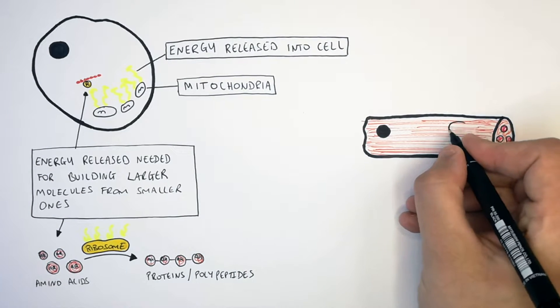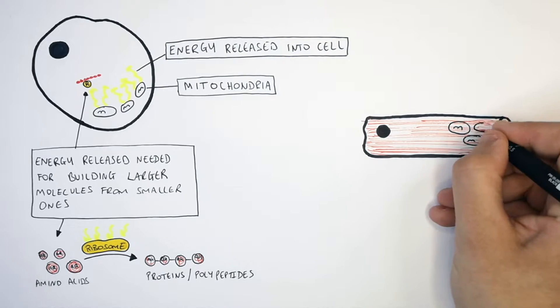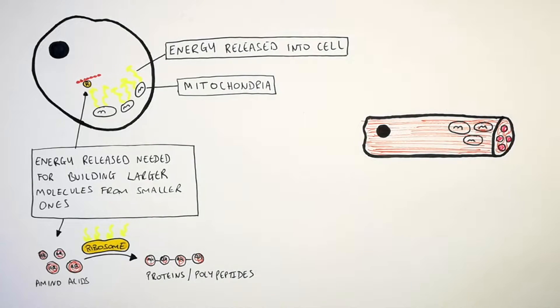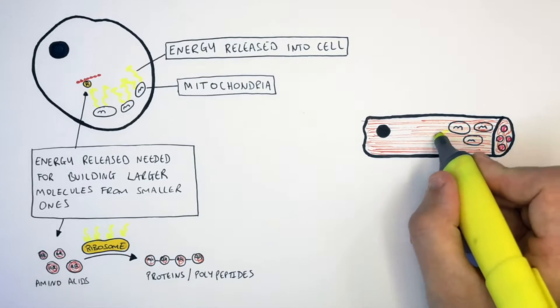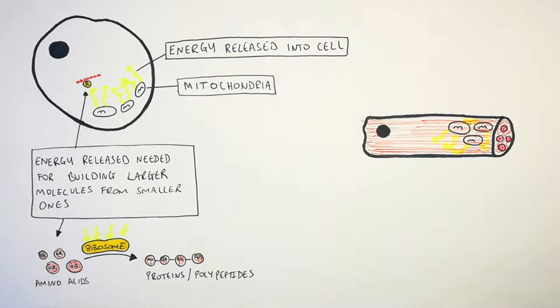This here is a muscle cell. Muscle cells have many mitochondria. As you can see here, these mitochondria are releasing energy into the cell. Muscle cells must relax and contract rapidly so we can move.